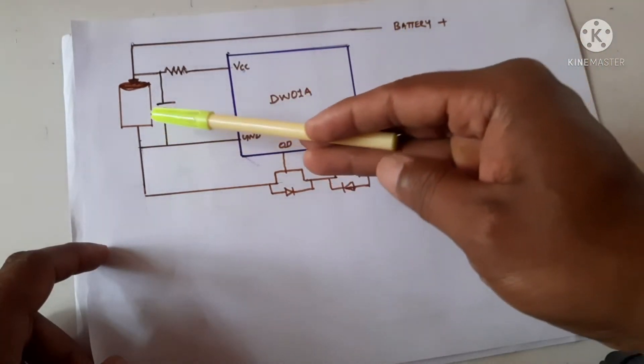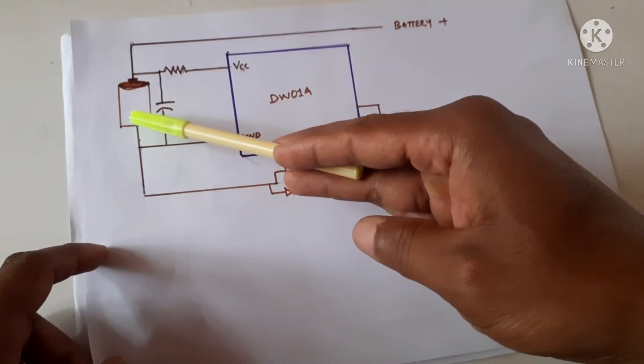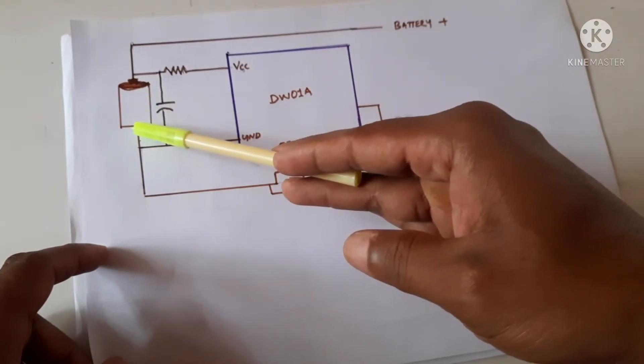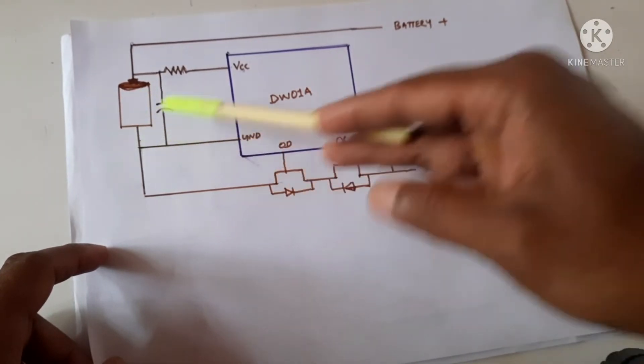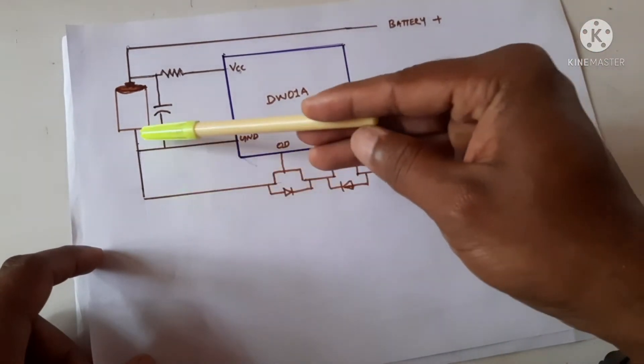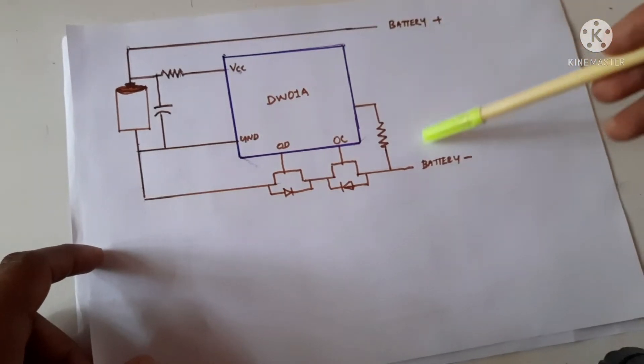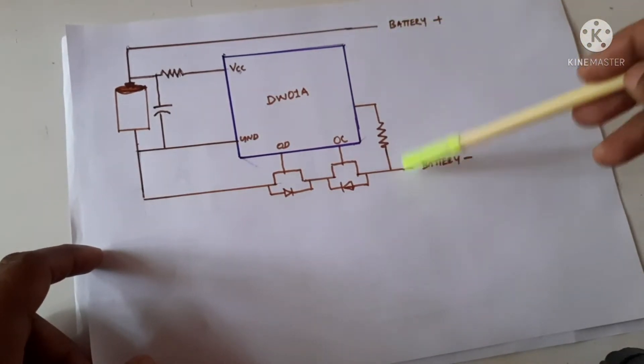We can use the battery only when the voltage is more than 3V. That means we have to charge the battery and after reaching more than 3V then only we can discharge the battery or we can take power from the battery.